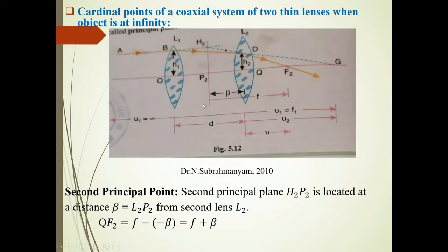Now, this H2P2 is located at distance beta from lens L2. So here, QF2 is F minus this beta. So F minus minus beta, because according to sign convention, it is minus beta. So F plus beta.